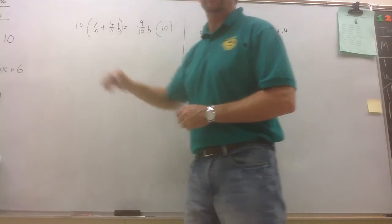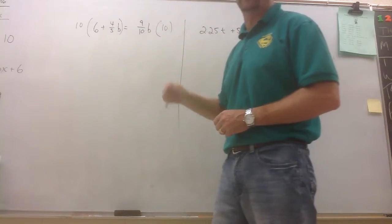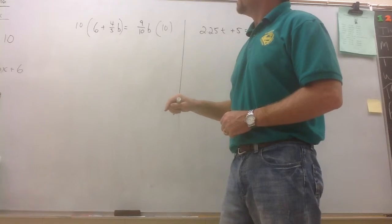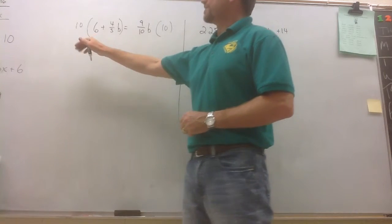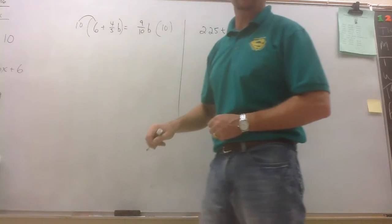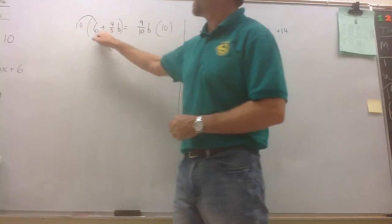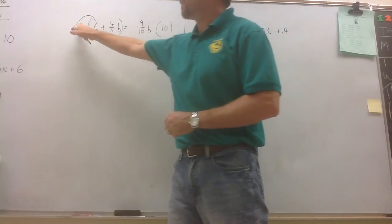Remember, if we multiply both sides of the equation by the same non-zero number, the equation is still true. So let's go ahead and do this. 10 times 6. Remember, you're using the distributive property. Everything inside the parentheses is getting multiplied by the 10.